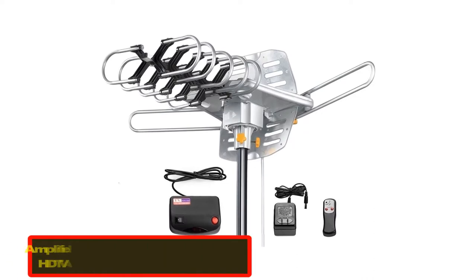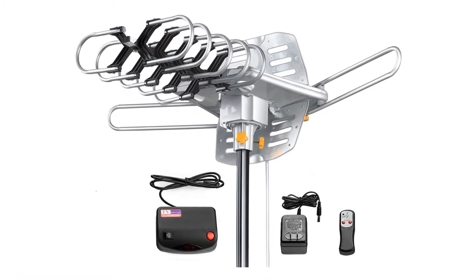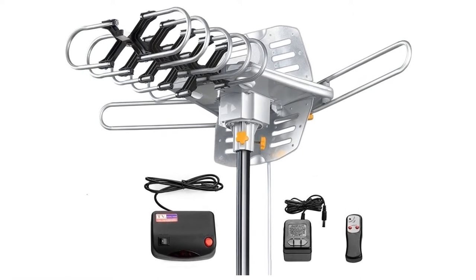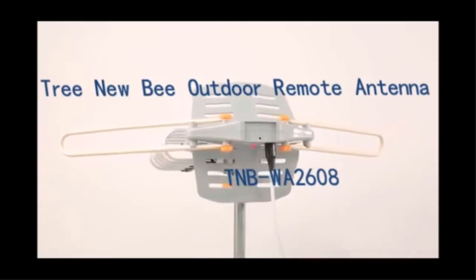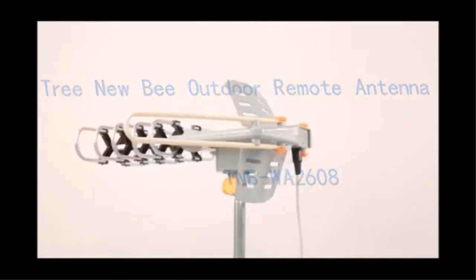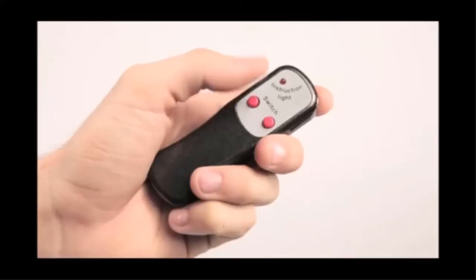Number four: Amplified HD digital outdoor HDTV antenna with 150-mile long range. This model sports up to 150 miles of range. It will receive any free digital broadcasts from high-definition TV signals. It also has full HDTV support, including 720p, 1080i, and 1080p.